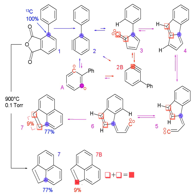Metabolic flux analysis (MFA) using stable isotope labeling is an important tool for explaining the flux of certain elements through the metabolic pathways and reactions within a cell. An isotopic label is fed to the cell, then the cell is allowed to grow utilizing the labeled feed. For stationary MFA, the cell must reach a steady state — where the isotopes entering and leaving the cell remain constant with time — or a quasi-steady state.